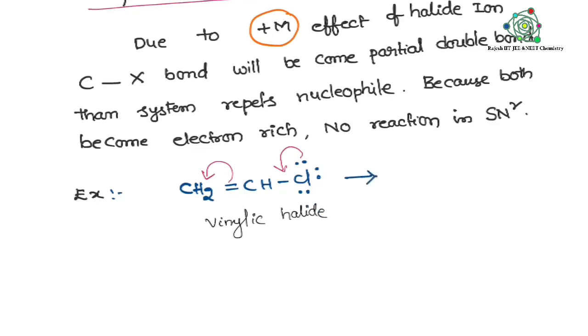So now due to that, here we discussed in the above, due to plus M effect, single bond is becoming double bond like this. Here you see CH2 minus. Have you got it? Right? Here C-X single bond is becoming double bond. So that is why here it is not involving in the SN2 also. Is it clear?